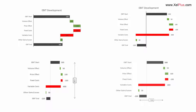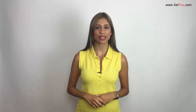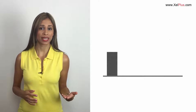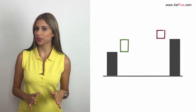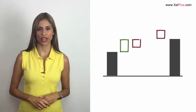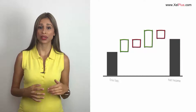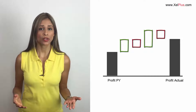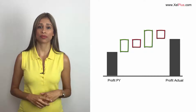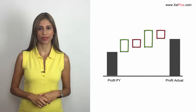A waterfall or a bridge chart is a way of visualizing data that explains the movement from one balance to another balance. They are common in corporate reports because they help to easily visualize the factors that are responsible for the change. For example, how you got from gross sales to net income, or how your profit developed from last year to this year.